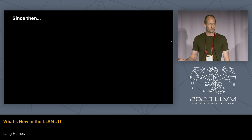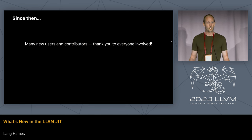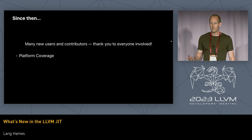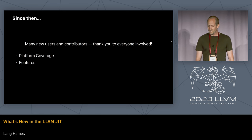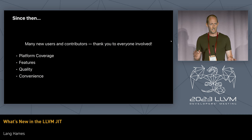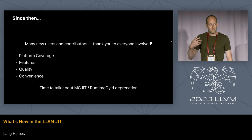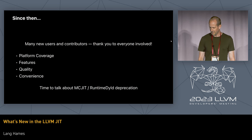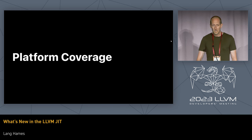What I wanted to talk about today is what we've been up to since then. The headline is that we've seen a lot of adoption and a lot of new community contributions, so upfront I wanted to say a huge thank you to everybody who's gotten involved. The work has fallen into four broad categories: platform coverage, new features, improved code quality, and new convenience APIs to make basic JIT use cases easier to read and understand. A theme I'll come to a couple of times is that the work has progressed to the point we can now reasonably talk about deprecating and removing MCJIT.